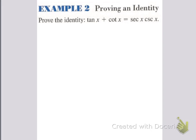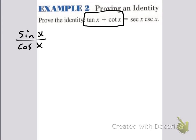Now, when you're doing one with trig identities, let's see if we can take this left side and make it look like the right side. First things first: tangent is sine over cosine, and cotangent is cosine over sine. So obviously these are not like denominators.